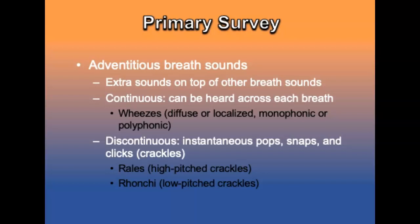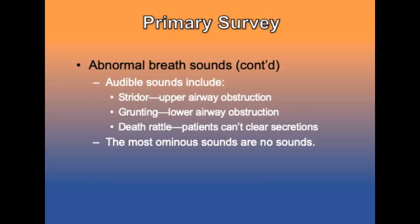Rales are high-pitched crackles in the lung bases heard at the end of inspiration, consistent with pulmonary edema. Rhonchi are low-pitched crackles caused by secretions in larger airways. Audible sounds include stridor from the upper airway, grunting from lower airway obstruction, or a death rattle — a low-pitched gurgling sound when patients can no longer clear secretions. As respiratory distress worsens, sounds may begin to diminish. The most ominous breath sounds are no sounds at all, indicating the patient is no longer moving enough air to ventilate the lungs.